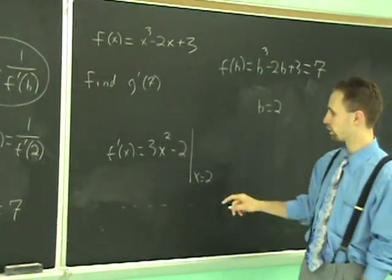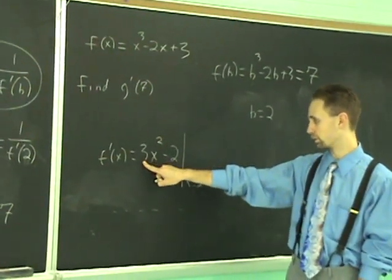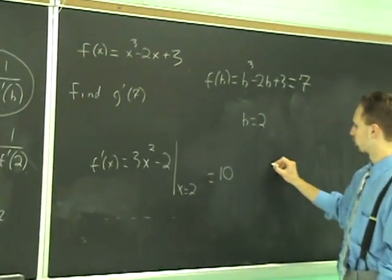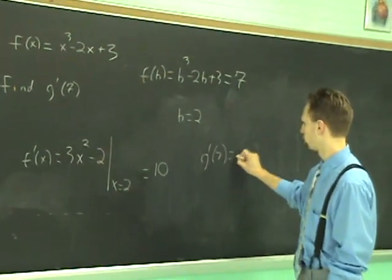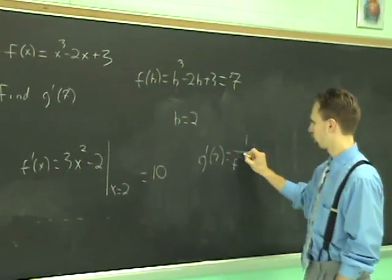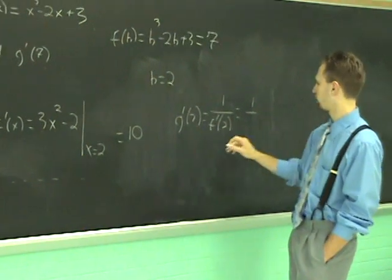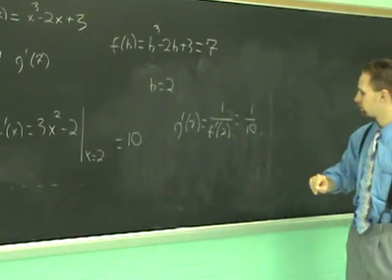And what do you get from that? 2 times 2 is 4. Times 3 is 12. Minus 2 is 10. And so, we got G prime of 7 equals 1 over F prime of 2, which equals 1 over 10. That's it.